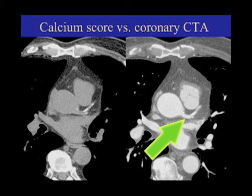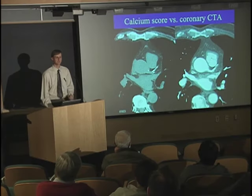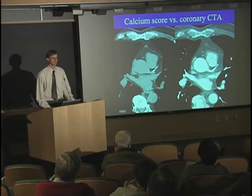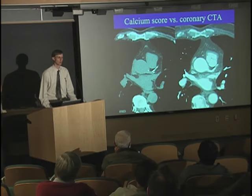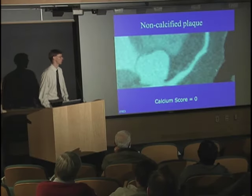With the contrast CT, I can say this vessel looks open. And so despite there being calcium here, I don't really see a narrowing. So if this patient had chest pain, I'd say it's probably not from their coronary artery disease.